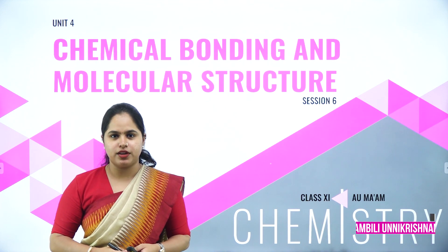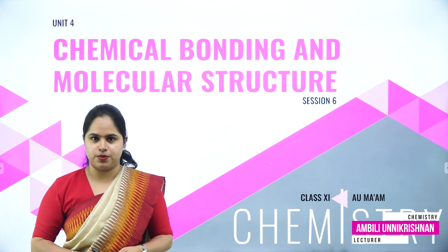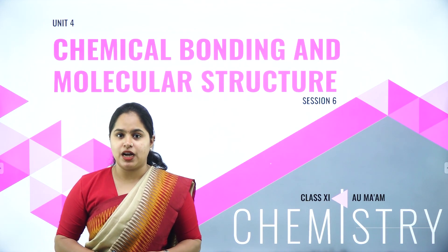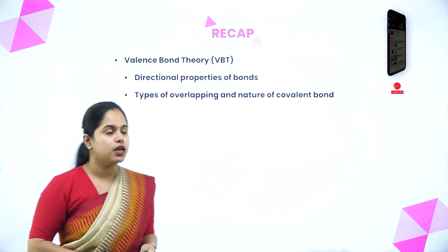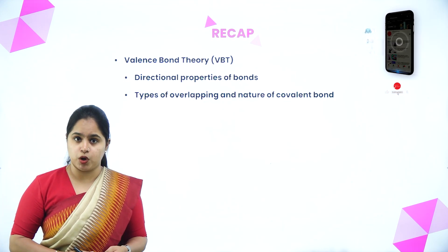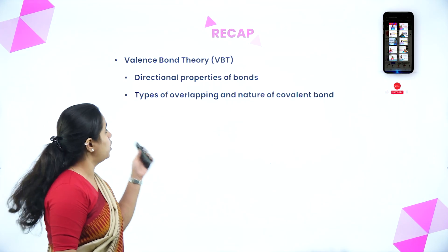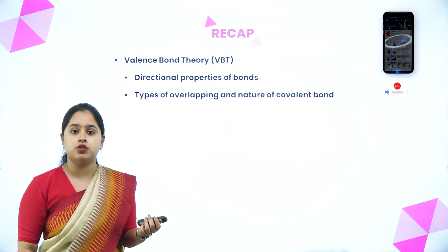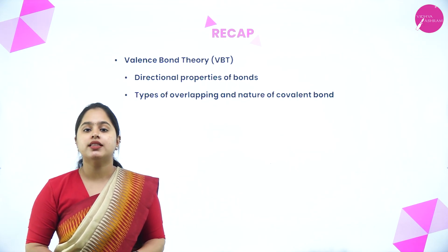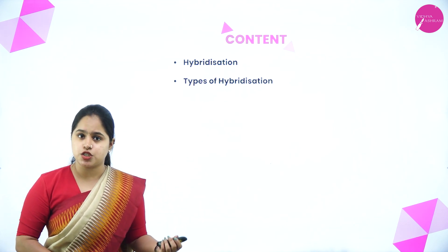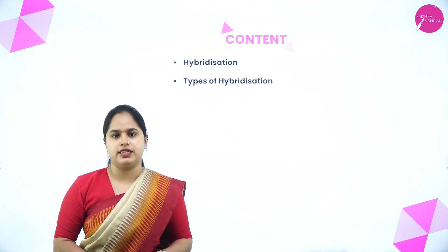Hello everyone, this is Ampli Unikrishnan from the Department of Chemistry, Vidyashram School of Excellence, Mysore. Today we are back with session 6 of the chapter, Chemical Bonding and Molecular Structure. In last class, we discussed about valence bond theory — we started with valence bond theory, discussed directional properties of the bond, different types of overlapping, and the nature of covalent bond. In this session, we are going to study about the next topic: hybridization and the different types of hybridization.